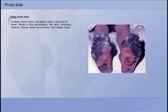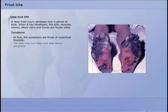A deep frost injury develops over a period of time. When it has developed, the skin, muscles, sinews, blood veins and bones are frozen solid. At first, the symptoms of deep frost injury are those of superficial frostbite. The skin may turn blue, and later black gangrene. The casualty may lose sensation. The skin may be stiff and cannot be moved in respect to underlying tissue.